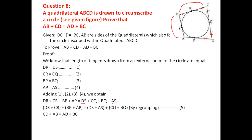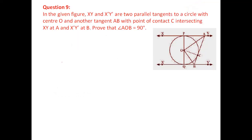Question 11 is linked to this one — it extends question 8 with a few more steps. Question 9: XY and X'Y' are two parallel tangents to a circle with center O. Another tangent is drawn with point of contact C, intersecting XY at A and X'Y' at B. Prove that angle AOB = 90 degrees.